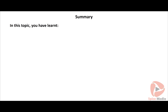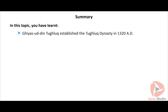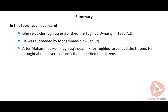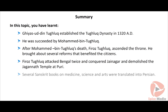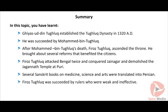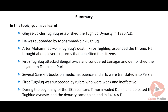In summary: Giyasuddin Tughlaq established the Tughlaq dynasty in 1320 AD and was succeeded by Muhammad bin Tughlaq. After Muhammad bin Tughlaq's death, Feroz Tughlaq ascended the throne and brought about several reforms that benefited the citizens. He attacked Bengal twice, conquered Jainagar and demolished the Jagannath Temple at Puri. Several Sanskrit books on medicine, science and arts were translated into Persian. Feroz Tughlaq was succeeded by weak and ineffective rulers. Timur invaded Delhi and defeated the Tughlaq dynasty in 1414 AD.